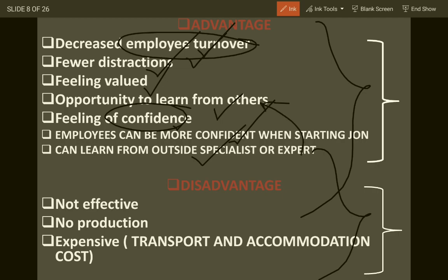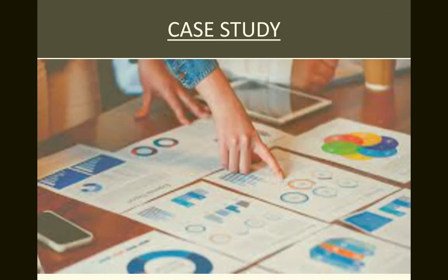Employees can also learn from outside specialists. Now for disadvantages: first, there is no production, because employees are taken away from the workplace and are just learning, not doing. In on-the-job training they were learning as well as doing. No production means no sales, no profit, and ultimately no contribution towards achieving the vision. Second, this is an expensive method because experts are hired from outside and the organization has to pay remuneration, accommodation, and other facilities. It is also not effective because employees are not productive.